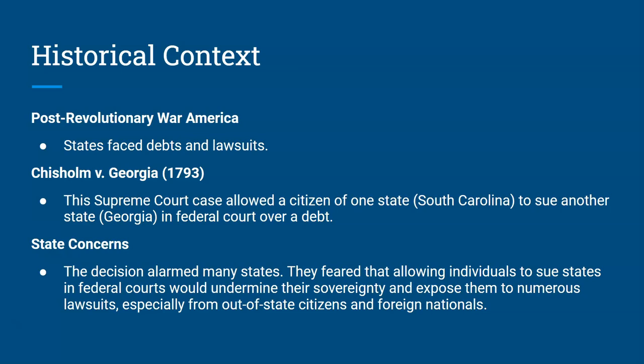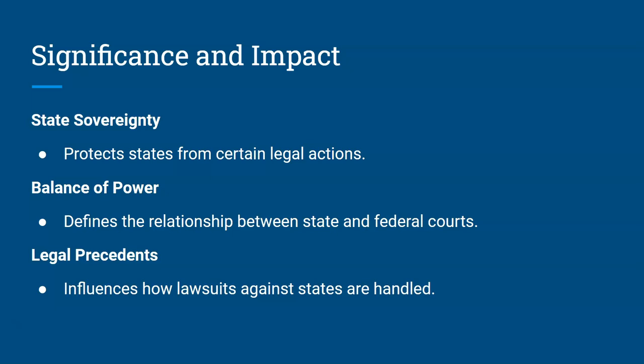States kind of freaked out because they said this was taking away the idea of state sovereignty. At the time, we had a stronger federal government under the Constitution, but they still wanted state governments to retain a lot of power. They were worried that allowing federal courts to hear cases where you could sue a state would undermine that state's power and sovereignty. So the states got together and pushed Congress to pass this amendment.